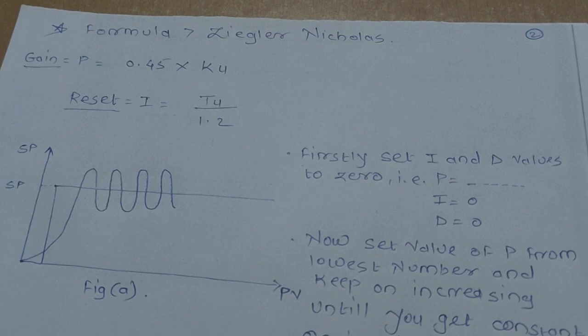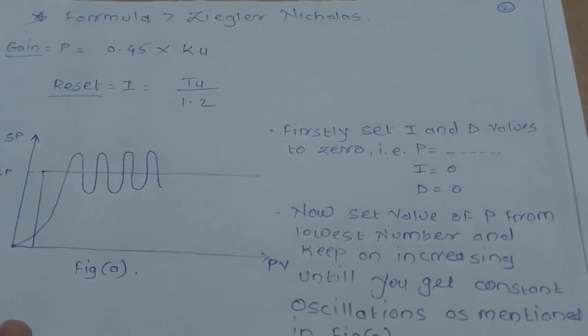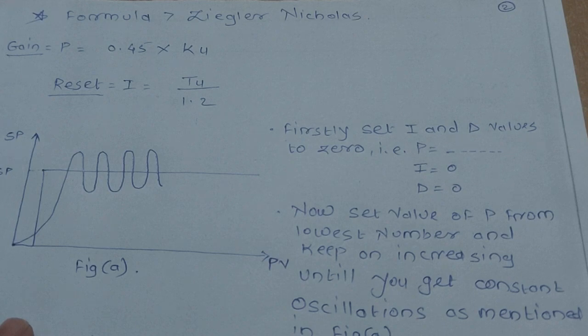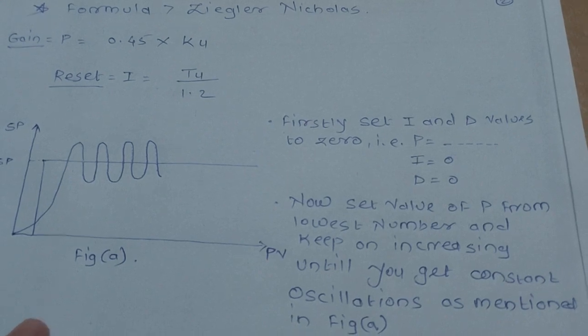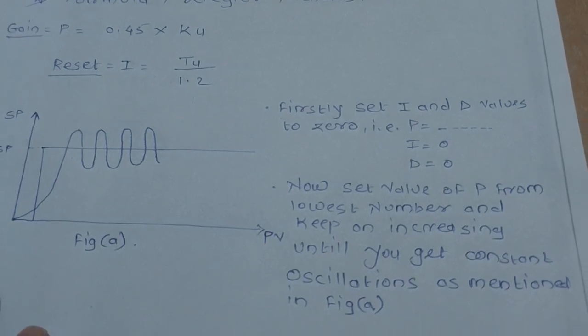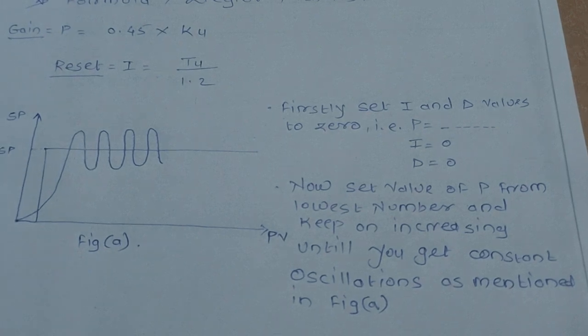To find out the value of Ku and Tu, firstly we have to set the PID controller where I and D parameters will be made zero, and we have to put the value of P from the lowest number and keep on increasing until you get constant oscillations, as mentioned in figure A.